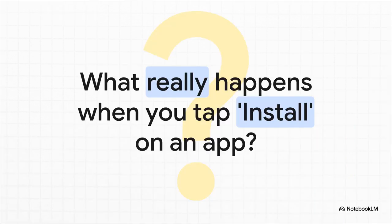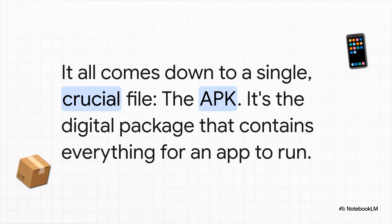So you're browsing the store, you see an app you want, you hit that big green install button, and boom — a few seconds later it's on your phone, ready to go. It honestly feels a bit like magic, right? But what's the actual thing, the digital package, that makes all of that happen? It all boils down to one file — the APK.